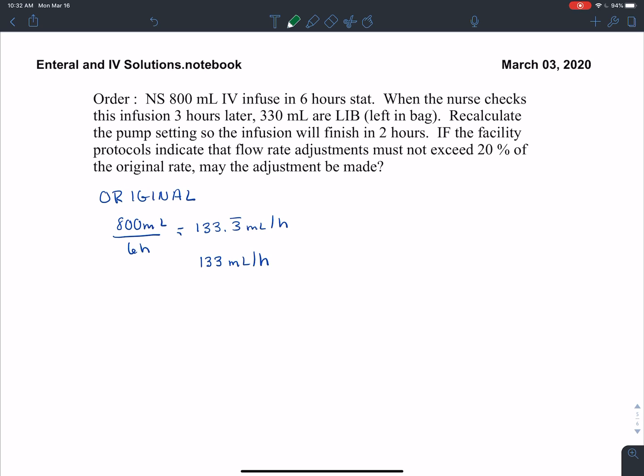Now if I deal with that adjusted rate, they say that three hours later. So we started with six hours, three hours have passed, so that means there's three hours left in the infusion. And there's also 330 milliliters. So I'm going to do my volume over the time remaining, and that will give me 110 milliliters per hour. I do not need to round.